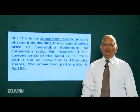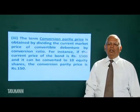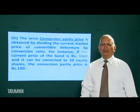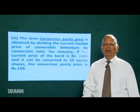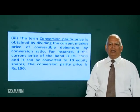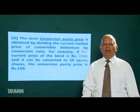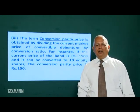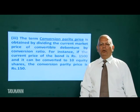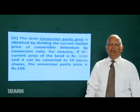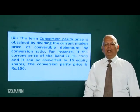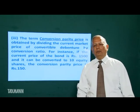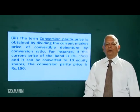The third term is conversion parity price. Conversion parity price is obtained by dividing the current market price of the convertible bond by the conversion ratio. For example, if the current price of the bond is Rs. 1500 and it can be converted into 10 equity shares, the conversion parity price is Rs. 150.